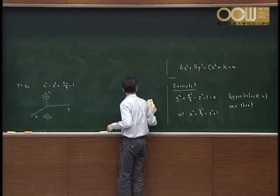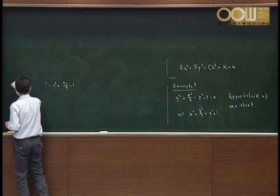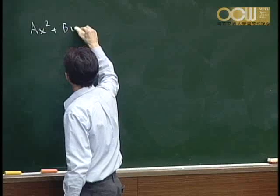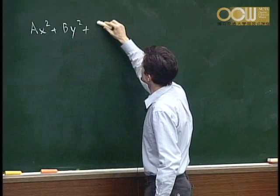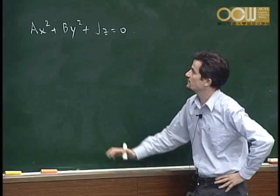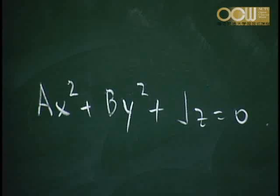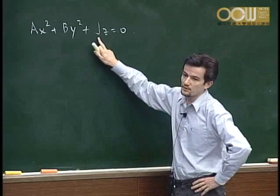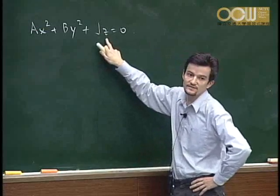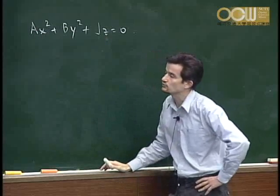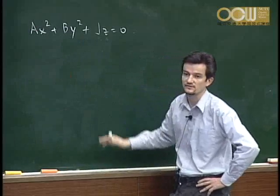Now what is left is the other equation: ax squared plus by squared plus jz equals zero, where all coefficients a, b, j must be nonzero. Without loss of generality, we can assume j is negative, since the sign is already taken into account. Then we just need to consider whether a and b are both positive, or one of them is negative — two types.